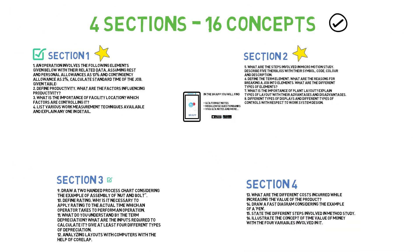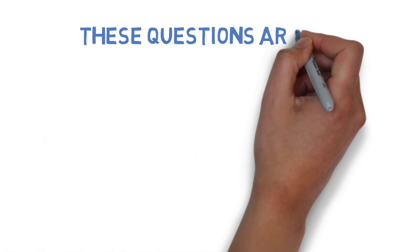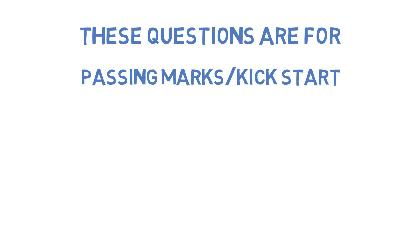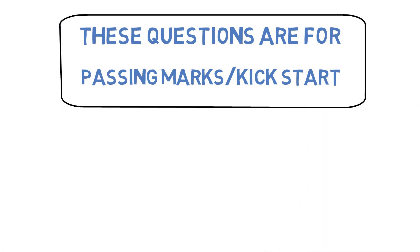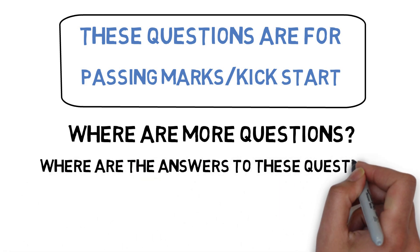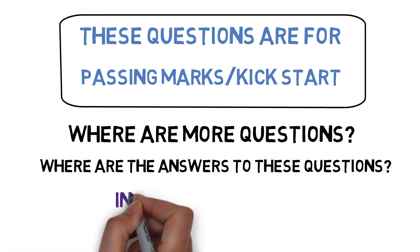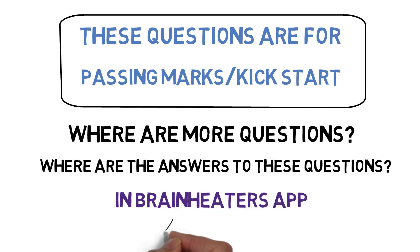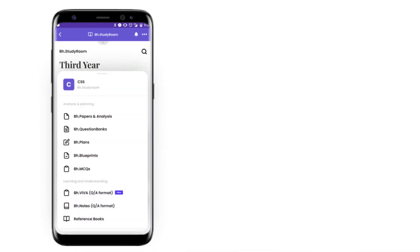These are the most important 16 concepts you need to do if you want a kickstart preparation for this subject or get passing marks. If you're wondering where to get more questions, we have already uploaded all the questions in the Brain Eaters plans. You will get three plans depending on whatever your aim is to score — passing marks, average marks, or scoring marks. All the answers are already available in BH notes.